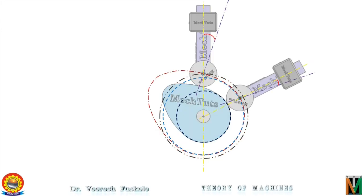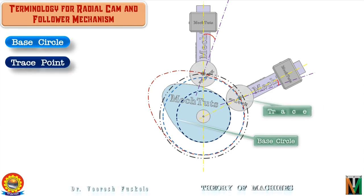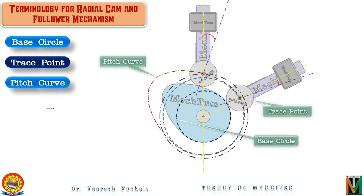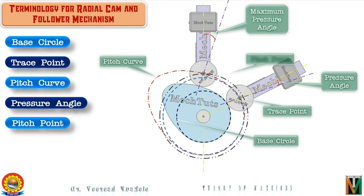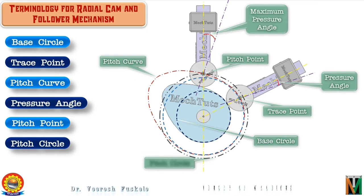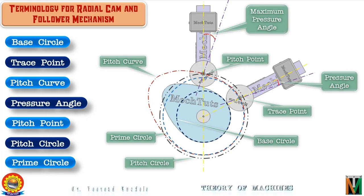To summarize: the base circle dictates the size of the cam; the trace point traces the motion of the follower and generates the pitch curve, which is parallel to the cam profile; the pressure angle is a critical term and should be less than the allowable value; the pitch point is where the pressure angle is maximum; the pitch circle is concentric with the base circle and passes through the pitch point; and the prime circle is tangent to the pitch curve with its center at the cam center. These are the terms used to define the radial cam and follower mechanism.